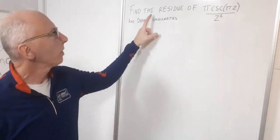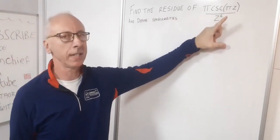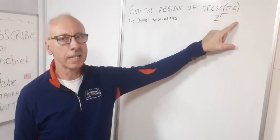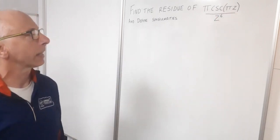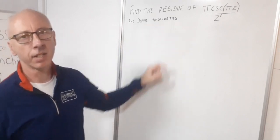Okay, so we've got a question here. We need to find the residues of π times the cosecant of πz all divided by z to the power of 6. And then also after that we're going to define the singularities.